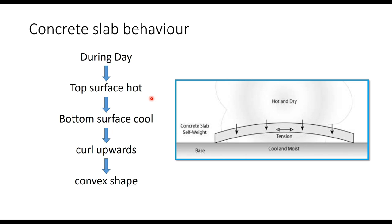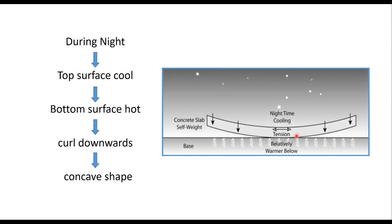Concrete slab behavior is different during daytime and nighttime. During daytime the top surface is hot and dry while the bottom surface is cool and moist, causing the slab to curl upward assuming a convex shape. During night the top surface is cool and the bottom surface is relatively warm, causing tension at the top and the slab curling downward in a concave shape.